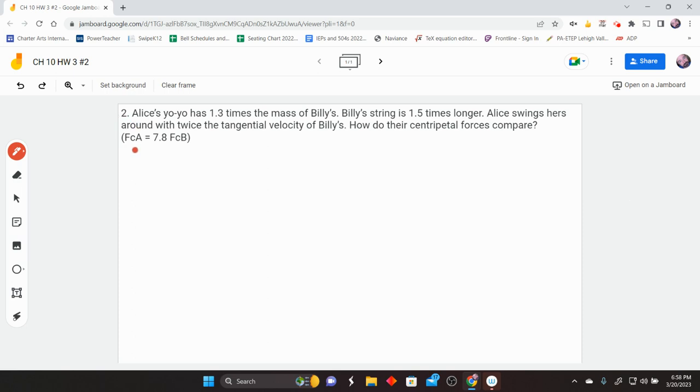So let's start with step one, of course. So what are we looking for? How do their centripetal forces compare? So what we want is F centripetal of Alice over F centripetal of Billy. This will be equal to something, and it's just some number without units.